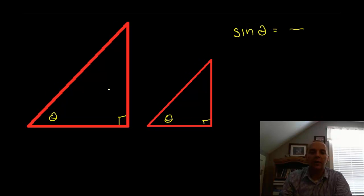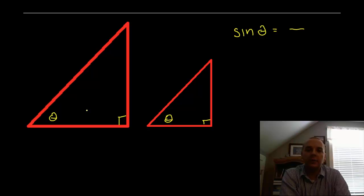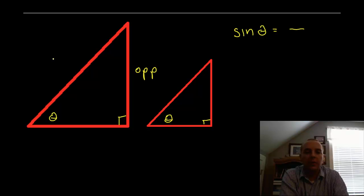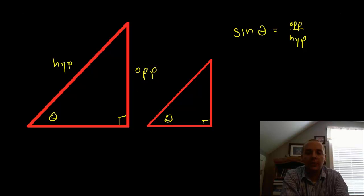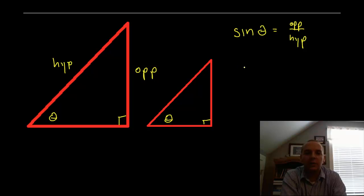Here we have a right triangle with an angle inside it. The trig functions give us a ratio of two sides of the right triangle. For example, sine of the angle gives you the ratio of the opposite edge compared with the hypotenuse. So sine of theta is opposite over hypotenuse. If the opposite edge was two and the hypotenuse was three, then sine of theta would be two-thirds. Likewise there's also cosine and tangent, but for right now let's focus on sine.